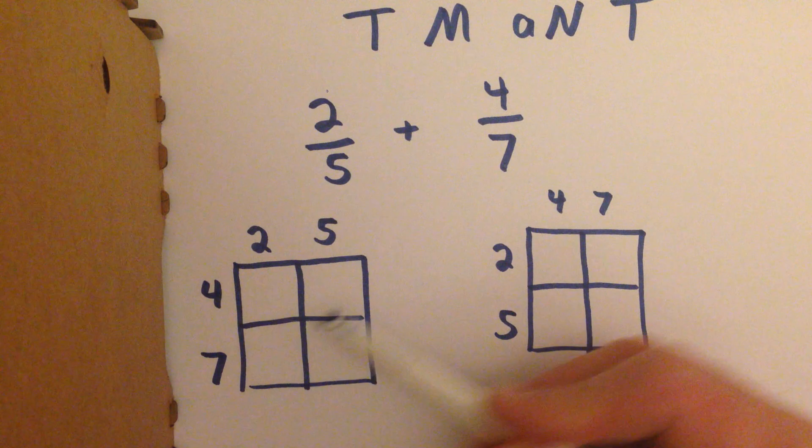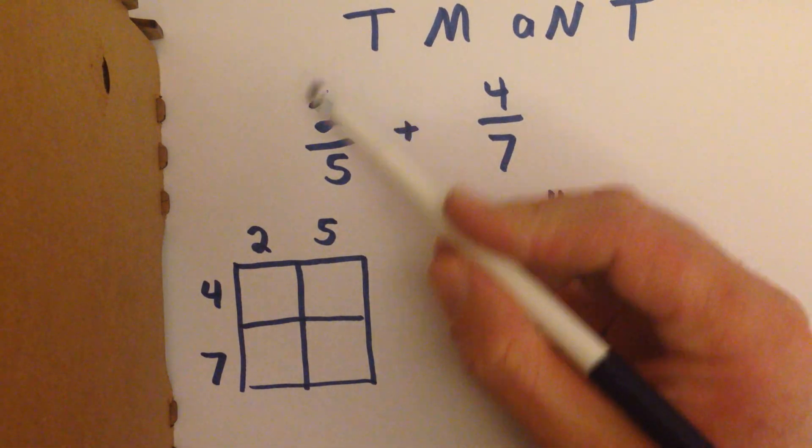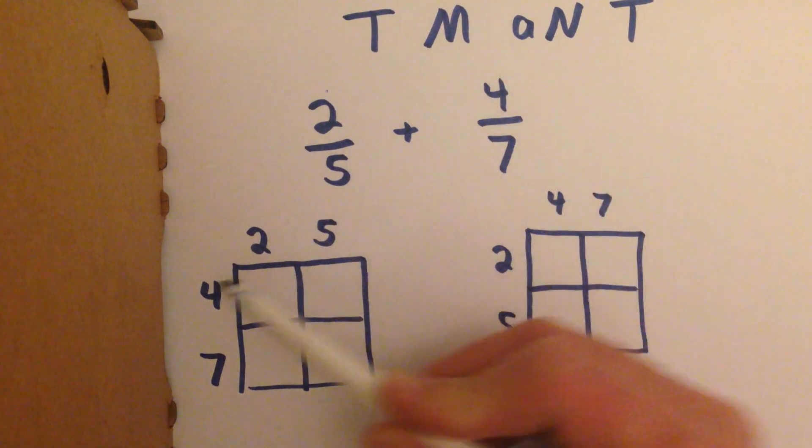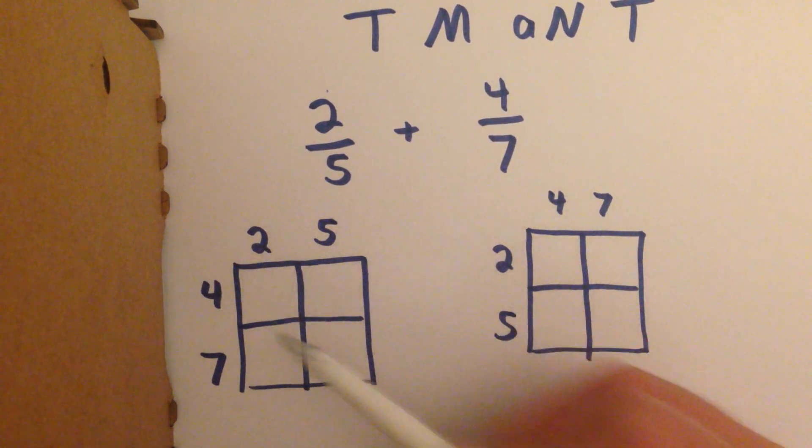So, we draw our window of knowledge, we keep our fractions together, so top over bottom, top over bottom, 2 fifths, 4 sevenths.